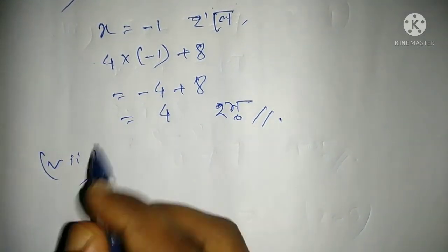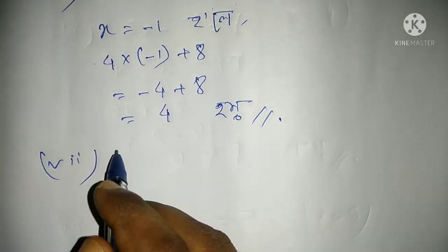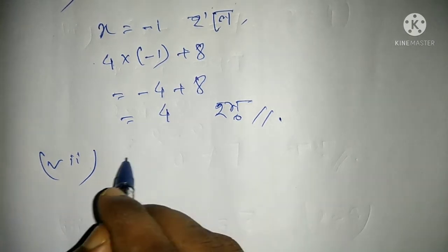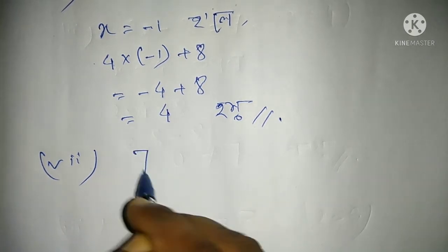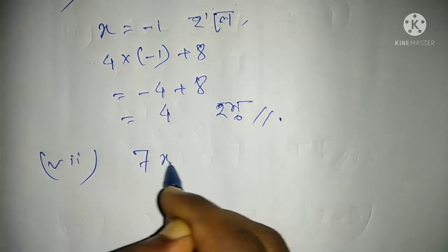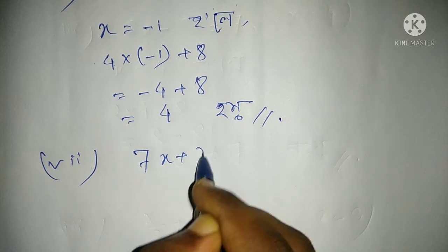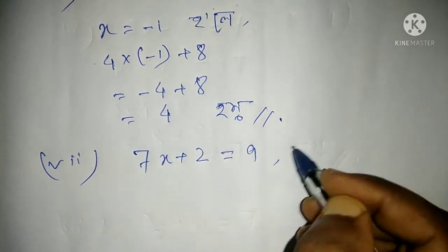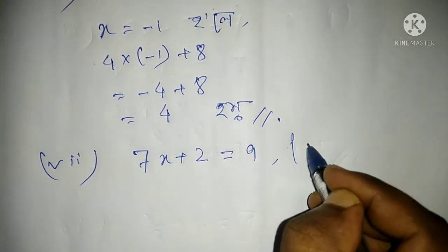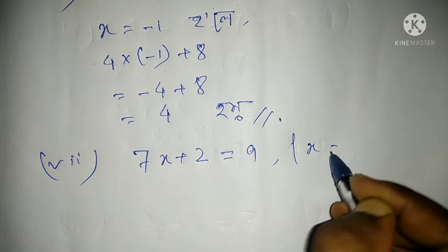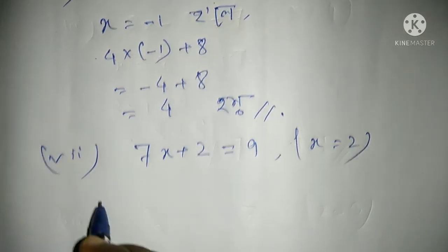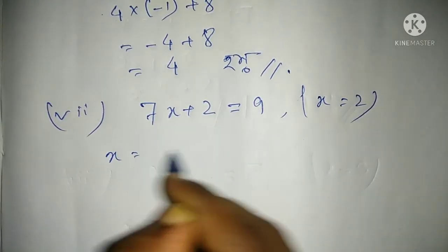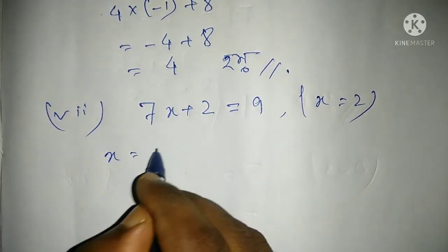Hat number: 7x plus 2 equal to 9. What is x? x equal to 2. So let us write x equal to 2.